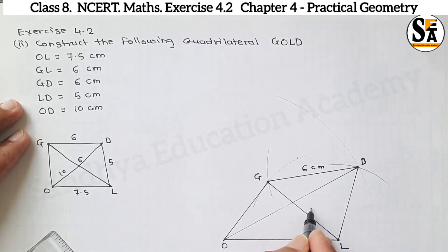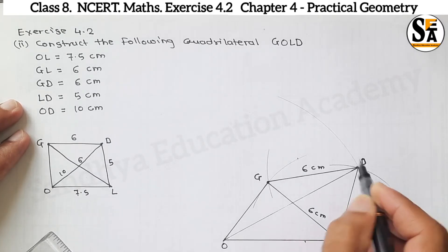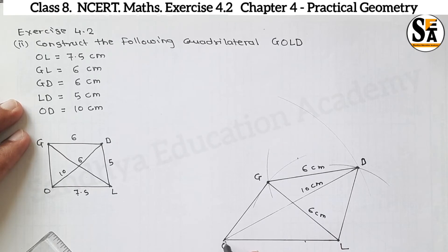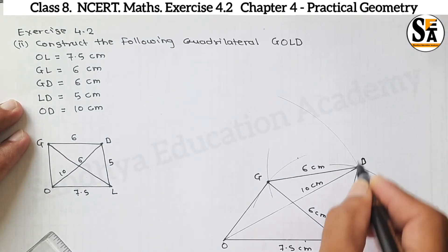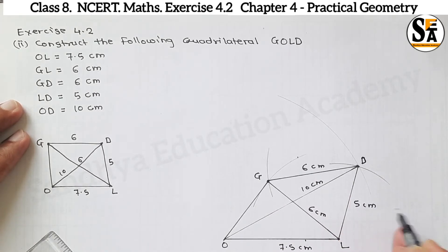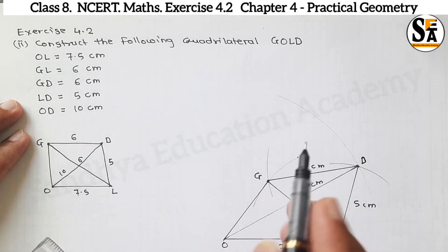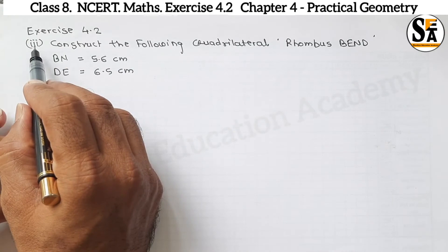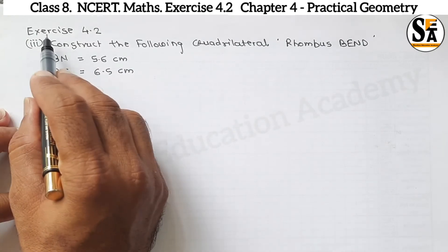GO is also 6 cm, OD diagonal is 10 cm, OL is 7.5 cm, and LD is 5 cm. Thus this is quadrilateral GOLD with all its dimensions verified.